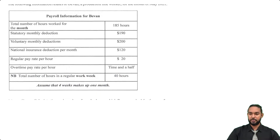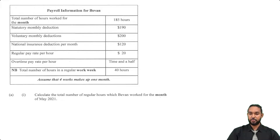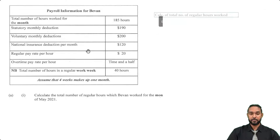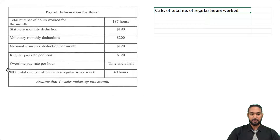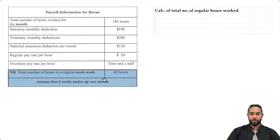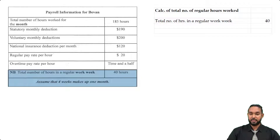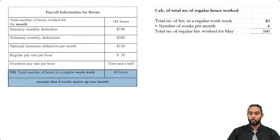The first thing they want us to do is calculate the total number of regular hours worked. The total number of hours in a regular work week is 40, and four weeks make up one month. So we take 40 and multiply by 4 to get 160 hours — that's the total number of regular hours for the month of May.